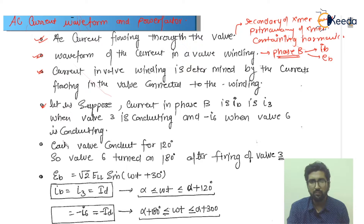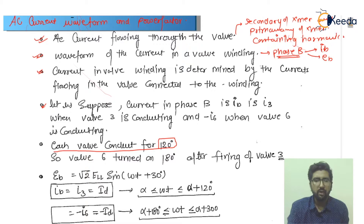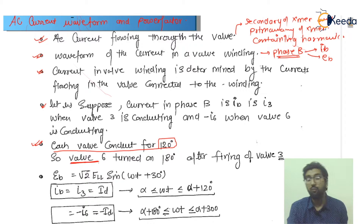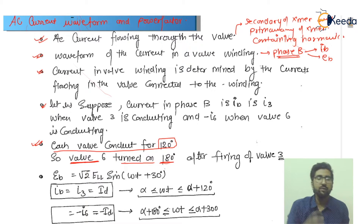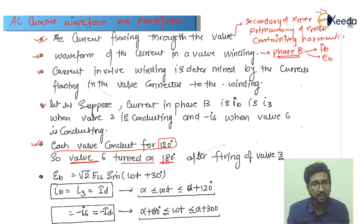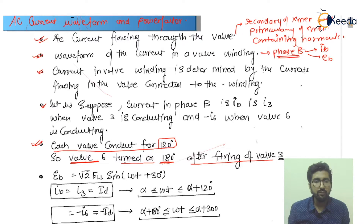If we talk about the conduction time for each thyristor (or 'wall'), each thyristor conducts for 120 degrees. Now, thyristor number six is turned on at 180 degrees after the previous thyristor completes. After the firing of thyristor three — let us suppose thyristor three is fired at 30 degrees — thyristor number six will operate at 30 plus 180 degrees.